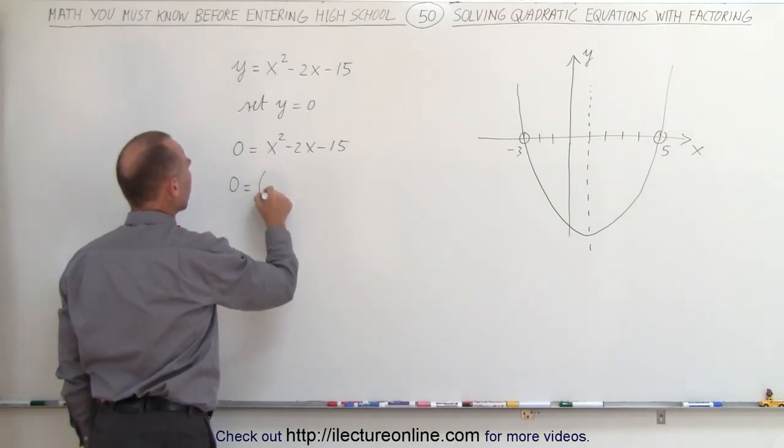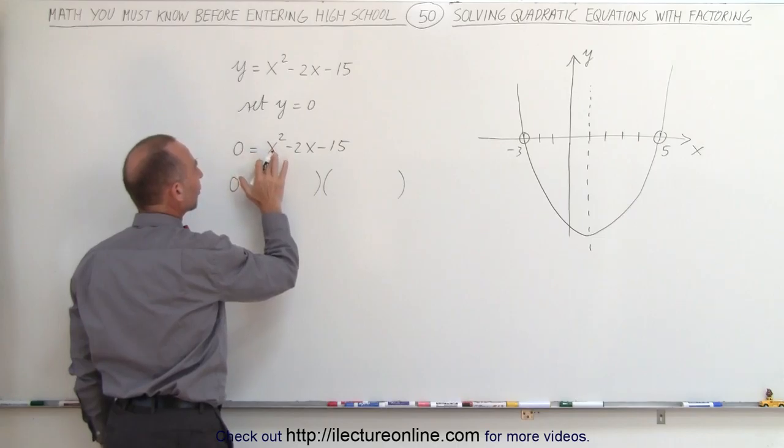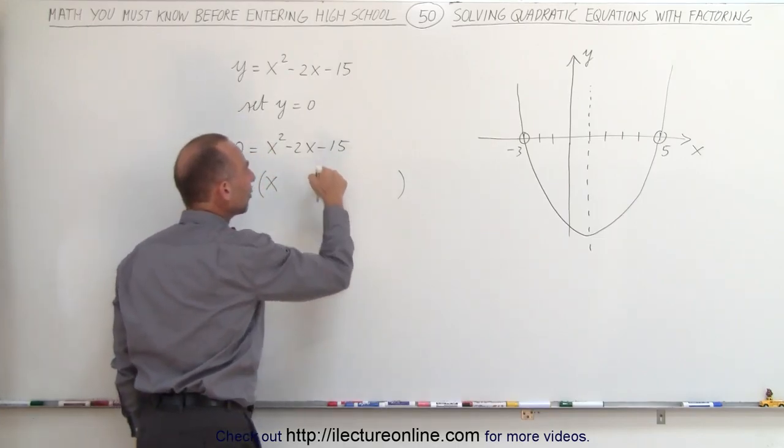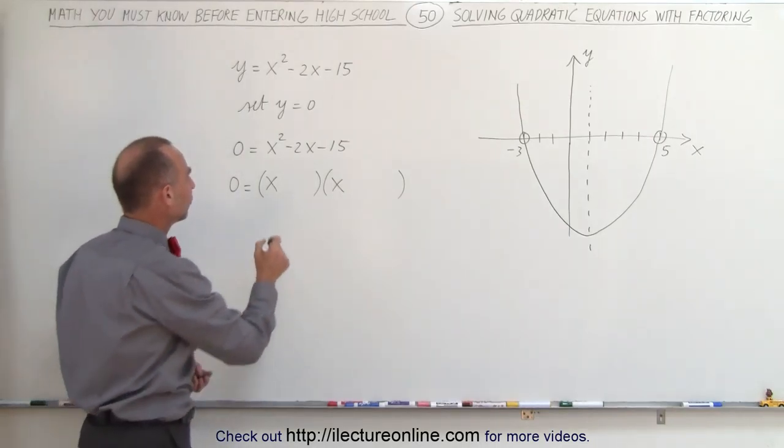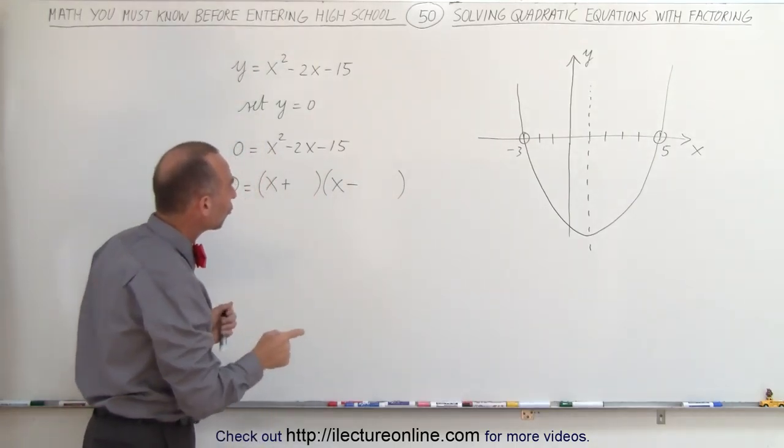So 0 equals, and we're going to get two parentheses like this. Since we have a 1 in front of the x², we can write x and x. The last number here is a negative number, which means the signs are positive and negative. So let me put a positive here and a negative there.